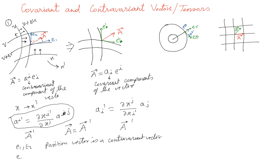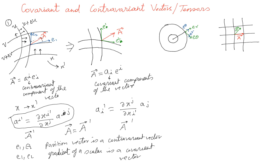For the same set of axes, the gradient of a scalar is a covariant vector, defined by the transformation laws — we can deduce this purely from transformation behavior. Conversely, the gradient will be a contravariant vector for the dual basis system. So it's just the other way around depending on which basis system you use.